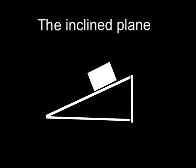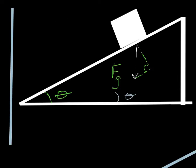Just as you thought you understood your SOH CAH TOA, we're going to throw in the inclined plane, which messes everything up a little bit. When we have a mass sitting on an inclined plane, the gravitational force is straight down. The normal force is perpendicular to the surface, so it points straight up, perpendicular to the surface.